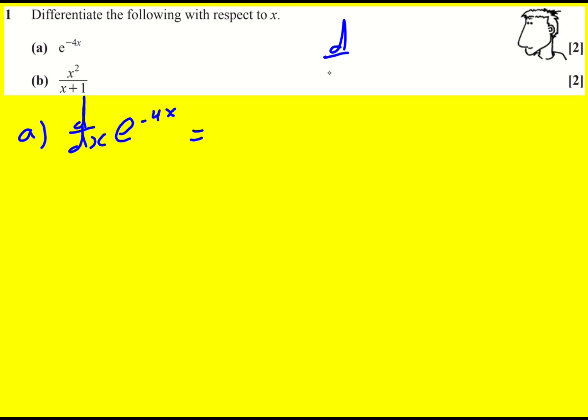Now you might remember from year one that d by dx of e to the kx is k e to the kx. You may have been shown where that comes from using limits and things and looking into why e to the x differentiates to itself. Or you might have been told it as a fact, but we can use it here.